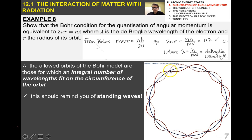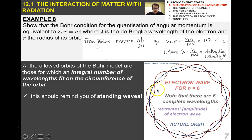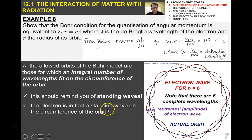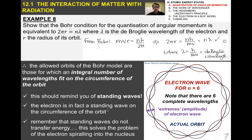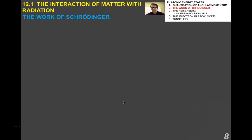This should remind you of standing waves. Notice that you have to have an integer number of wavelengths fitting on the circle in order for the standing wave to be continuous. For example, this is an electron wave function for N equals 6 — you can count 6 complete wavelengths. The extremes are the amplitude of the electron wave. The electron is in fact a standing wave on the circumference of the orbit. Remember that standing waves don't actually transfer energy, which also solves the problem of the electron spiraling into the nucleus — a problem with previous models of the atom.